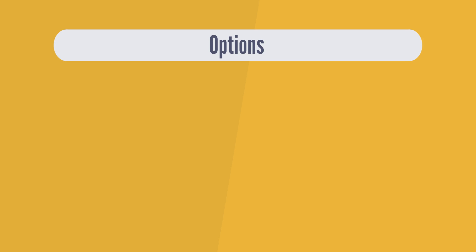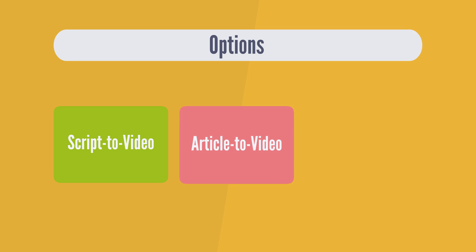Lumen5 offers various options. You can use your own text or use a script generated by an AI such as ChatGPT. Alternatively, you can easily copy and paste a link to a blog post or website and Lumen5 will use the content from that page as a script for the video it generates.